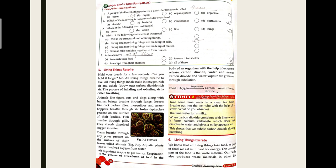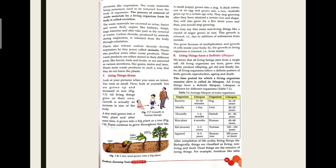The process of removal of waste material by a living organism from its body is called excretion. The waste materials produced in our body are urine, faeces, and sweat. The organs involved in removing these waste materials include the kidneys, lungs, large intestine, and skin.